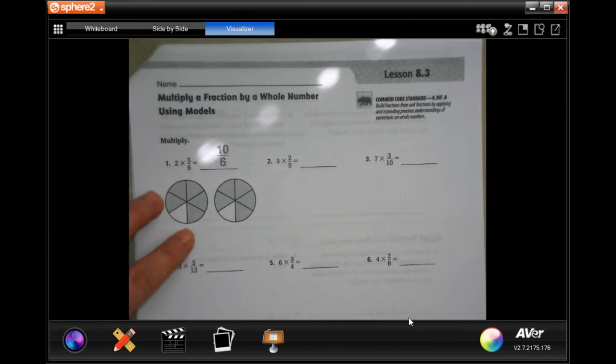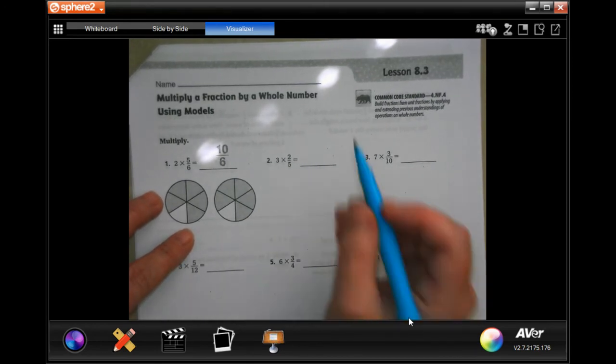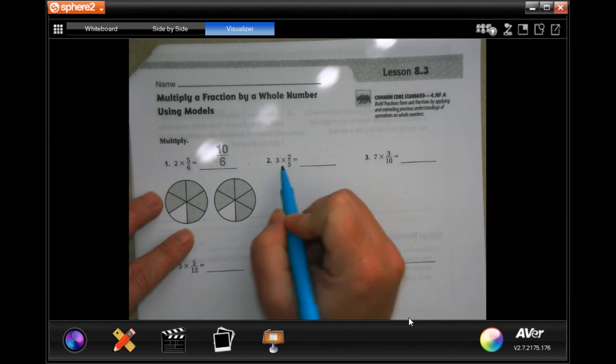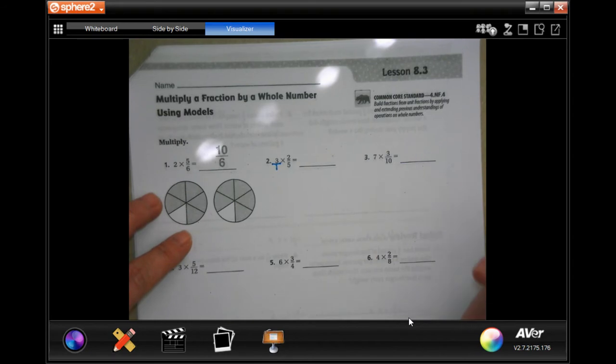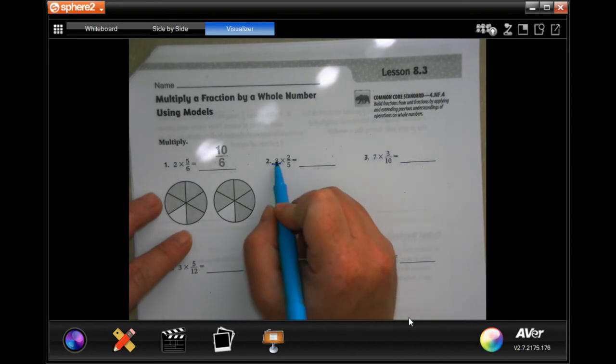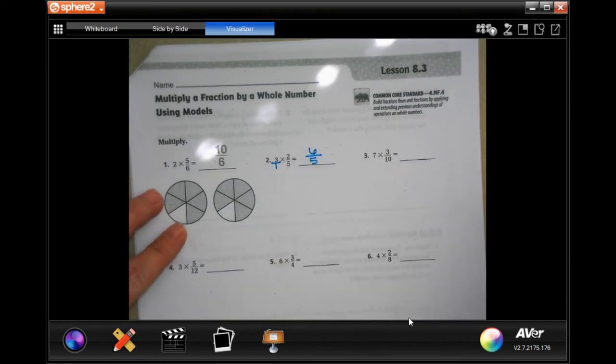We're going to go ahead and get started with number two. Y'all are going to love these because all you have to do is literally multiply straight across. If it's a whole number, you're just going to put a one under it. Three over one is equal to three. It's the same thing. So now, multiplying straight across, three times two is six. One times five is five.